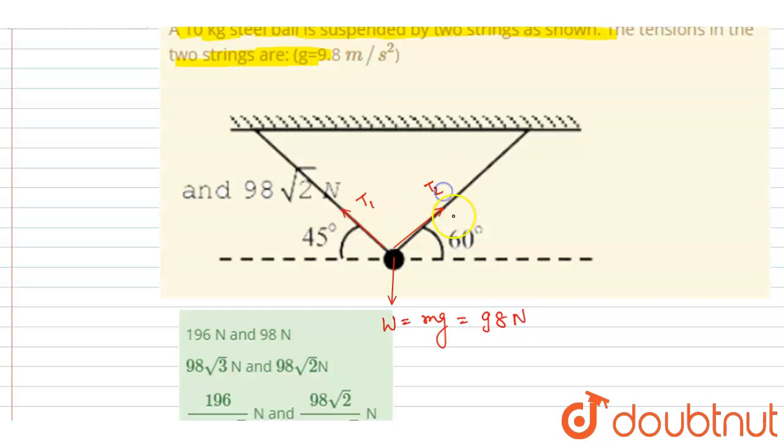If you see, the net horizontal force on this ball should be equals to zero. So I will write this is T1 cos 45. This is T2 cos 60.